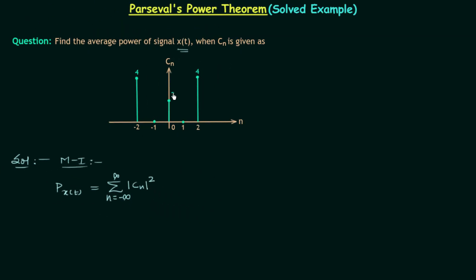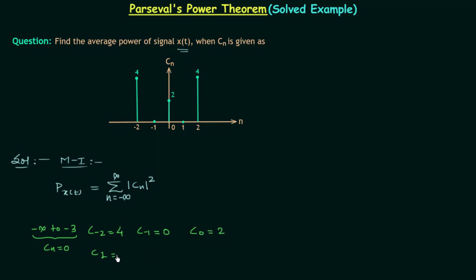Looking at the plot of c_n: when n is equal to minus infinity to minus three, c_n is equal to zero. When n equals minus two, c_n equals four. c_0 is equal to two, c_1 is equal to zero, c_2 is equal to four, and when n equals three to plus infinity, c_n equals zero. So we have three non-zero coefficients: c_{-2}, c_0, and c_2.